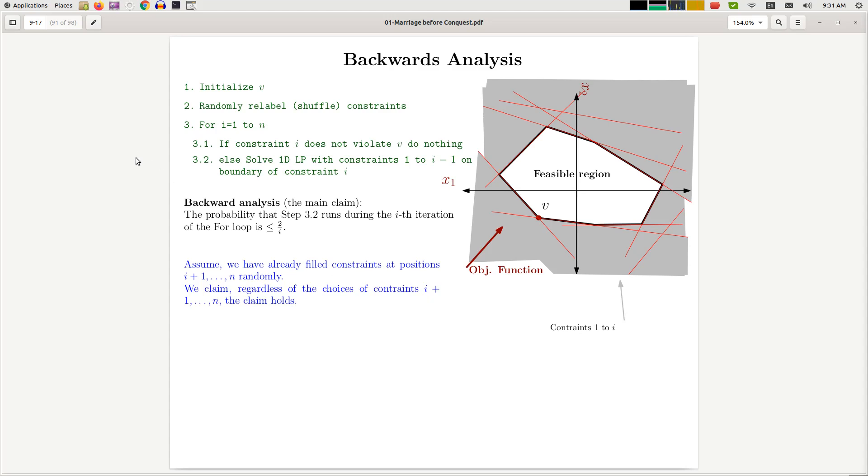And obviously the i-th iteration of this algorithm does not depend on the choice of constraint i+1 up to n. In other words, we don't really care about this. If I have a fixed set of values, or I have a fixed set of constraints for the constraint 1 to i, that only depends on that fixed set. It means i+1 up to n. So this is independent of the order of the constraints i+1 up to n. So we focus only on constraint 1 to i.